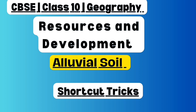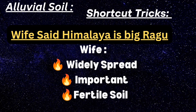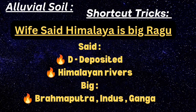Let's start. The first shortcut is: 'WIFE SAID HIMALAYA IS BIG RAHU.' Take the word WIFE: W refers to widely spread, I refers to important, FE refers to fertile soil. So alluvial soil is widely spread, important, and fertile soil. Using just the word WIFE, we can write all three points. Next, take the word SAID - the last letter D means deposited, and HIMALAYA refers to the Himalayan river system.